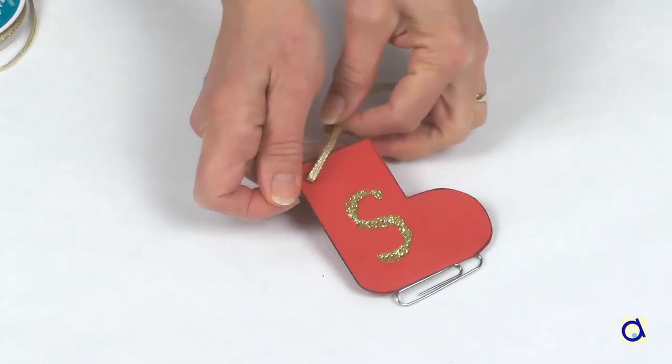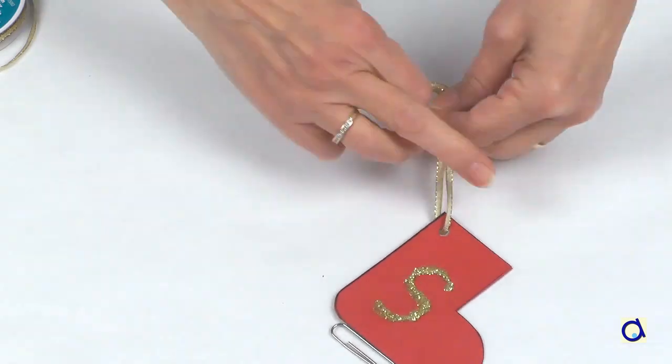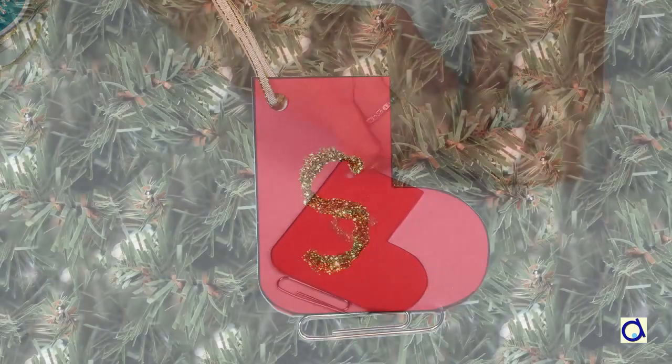To finish, thread the ribbon through the hole. And there your skate is ready to be hung in the tree.